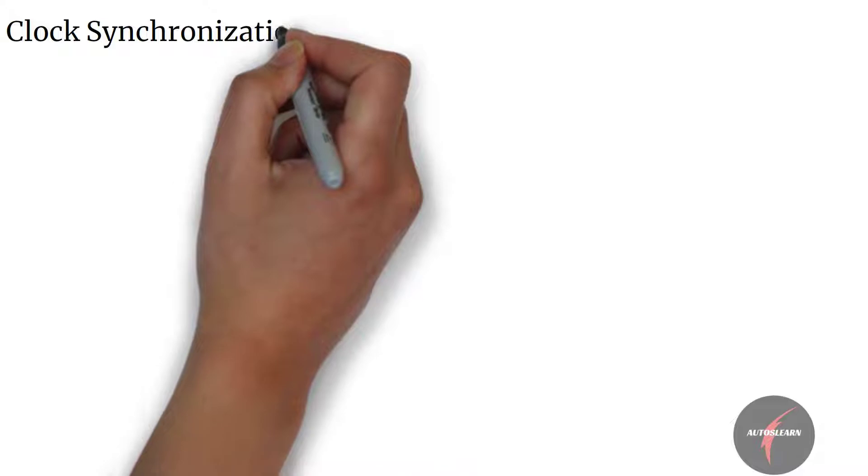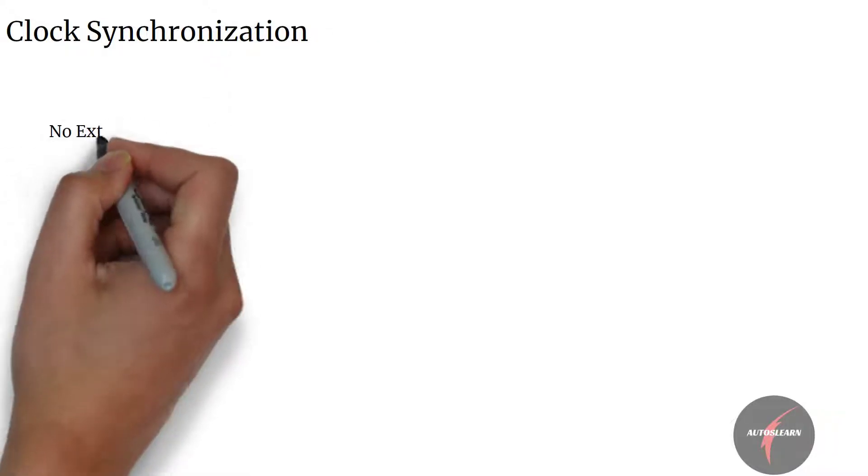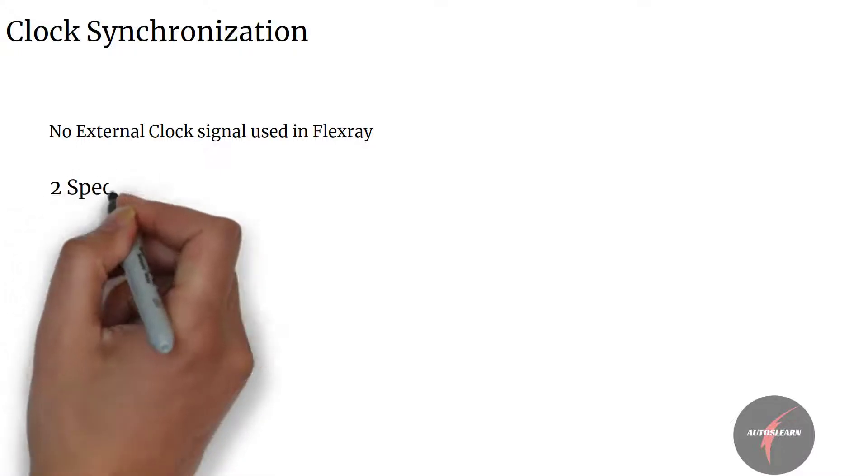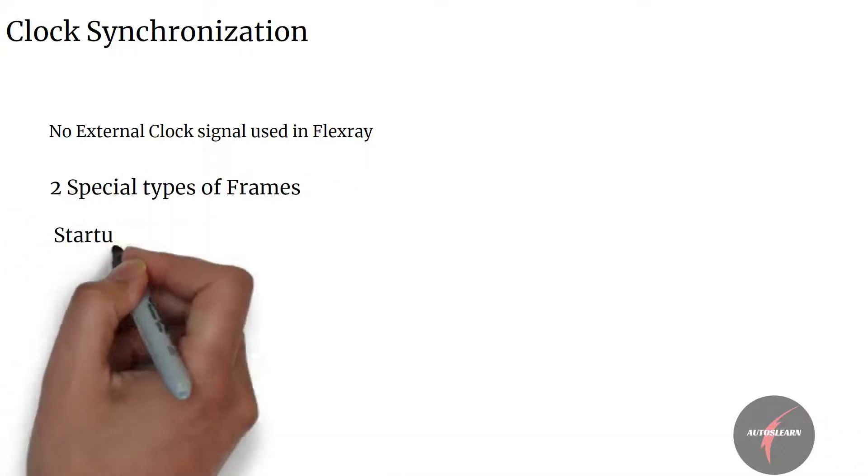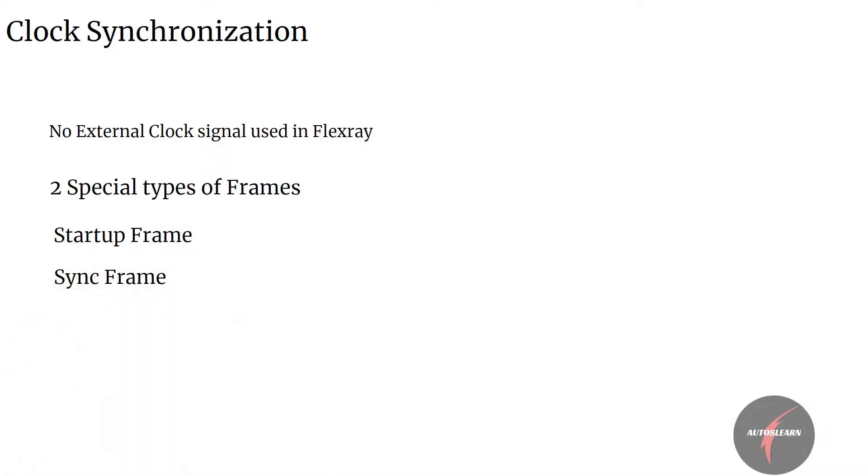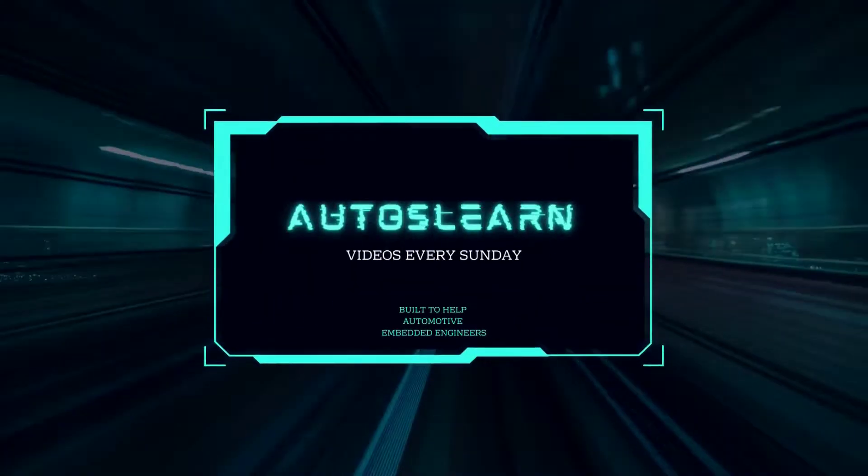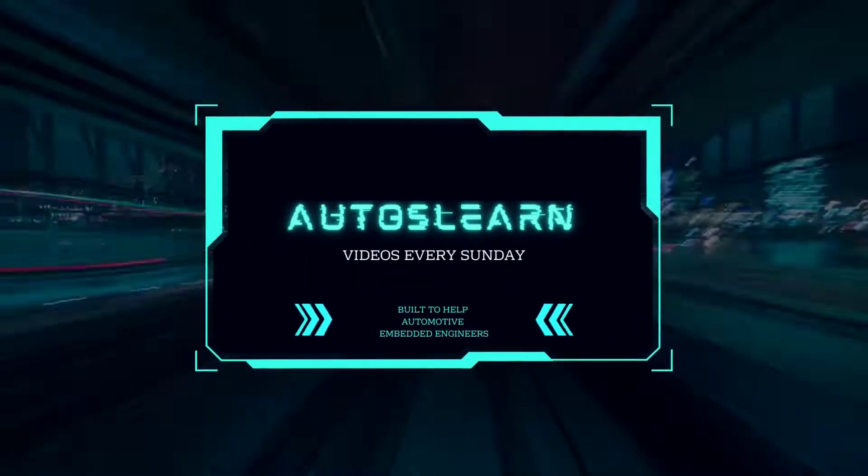Clock synchronization happens in the FlexRay network. FlexRay has a unique ability to synchronize nodes on the network without any external synchronization clock signal. To do so, it uses two special types of frames: startup frame and sync frame.